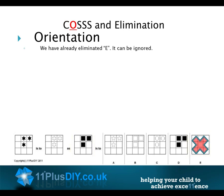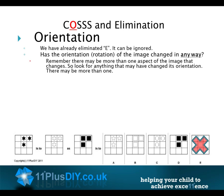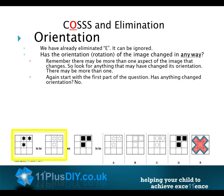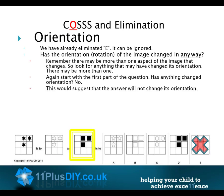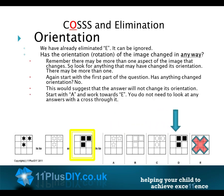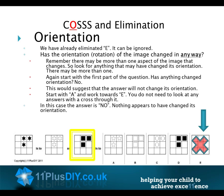We have already eliminated E — it can be ignored. Has the orientation or rotation of the image changed in any way? Remember, there may be more than one aspect that changes, so look for anything that may have changed its orientation. Starting with the first part of the question — has anything changed orientation? No. This would suggest that the answer will not change its orientation. Working from A towards E, nothing appears to have changed its orientation.